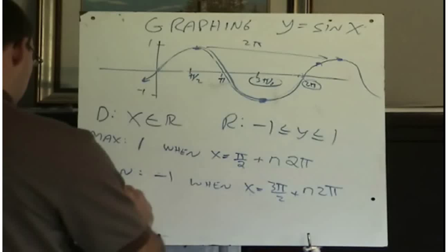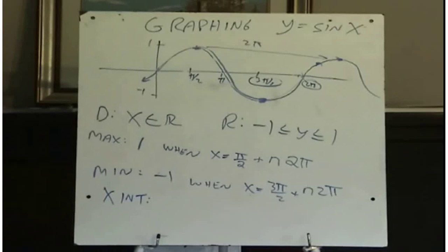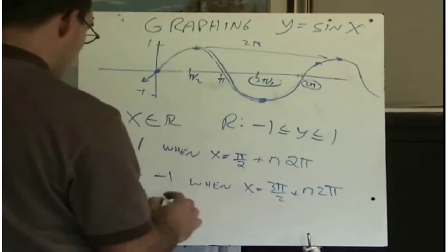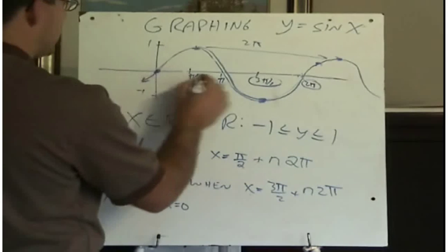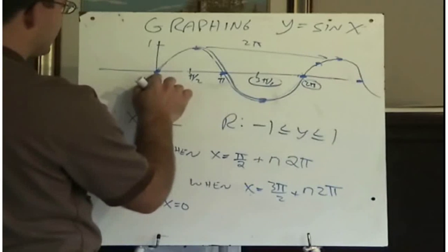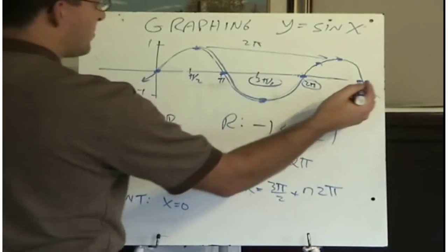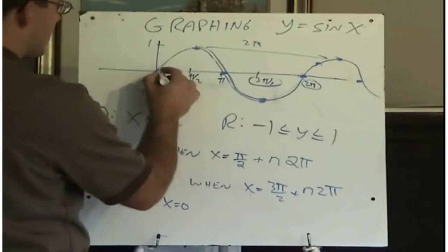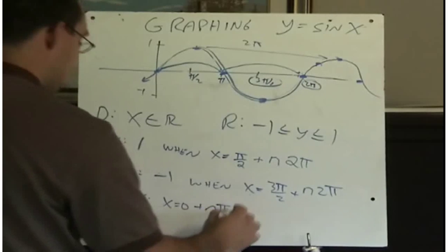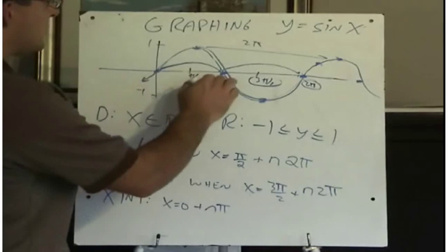We haven't talked about the x-intercepts yet. What are the x-intercepts? Here's one right here — the x-intercept is 0. Is that the only one? No. There's one at 0, here's one at pi, here's one at 2 pi. Following the pattern, there'll be one at 3 pi, 4 pi, 5 pi. So we seem to be adding pi each time, meaning the x-intercepts occur at 0 plus any multiple of pi.